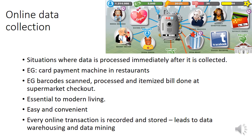Online data collection includes situations where data is processed immediately after it's collected. For example, if you pay with a card at a restaurant, your card data is collected and the transaction is immediately sent to your bank for processing. Another example is when barcodes are scanned and processed to produce an itemised bill at a supermarket checkout. Every online transaction is recorded and stored, which leads us to data warehousing and data mining.